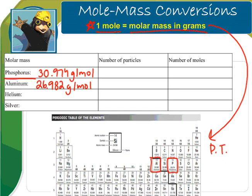The number of particles is always going to be 6.02 times 10 to the 23rd. This is Avogadro's number that you should have read about previously. And the number of moles is always going to be equal to 1 mole.